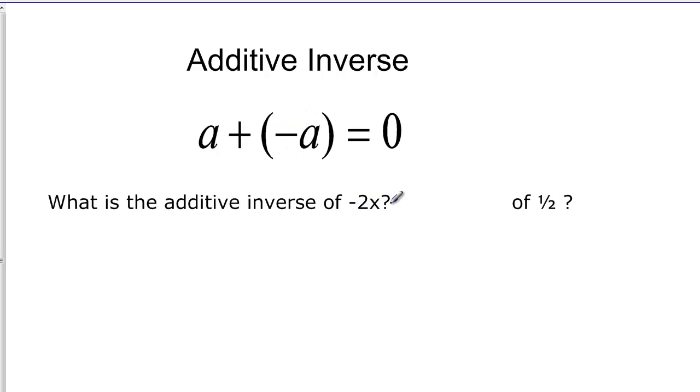So here I have negative 2x. I want the opposite of negative 2x. That would be a positive 2x. So if I add negative 2x plus 2x, just to check, I definitely get zero.